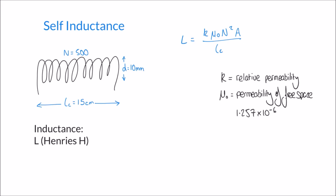The permeability of free space sounds like a confusing term, but thankfully for us it's a constant. It's given by the value 1.257 times 10 to the minus 6, and whenever mu-naught appears in our equation we just substitute in this number: 1.257 × 10⁻⁶.